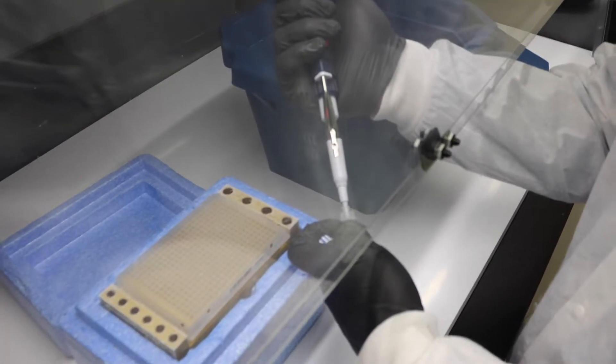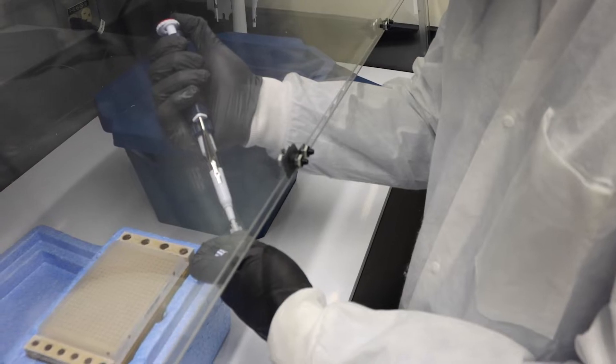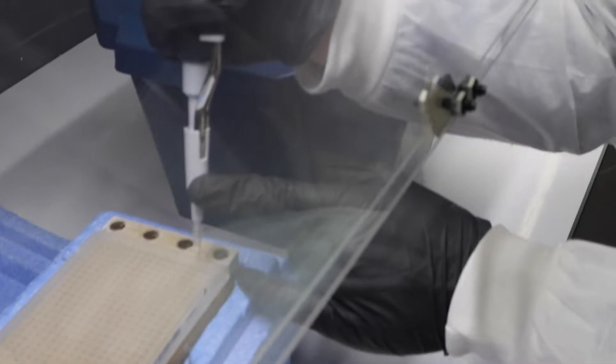Nuclease-free water is added to two wells of the 384-well PCR plate to act as a negative sample control.